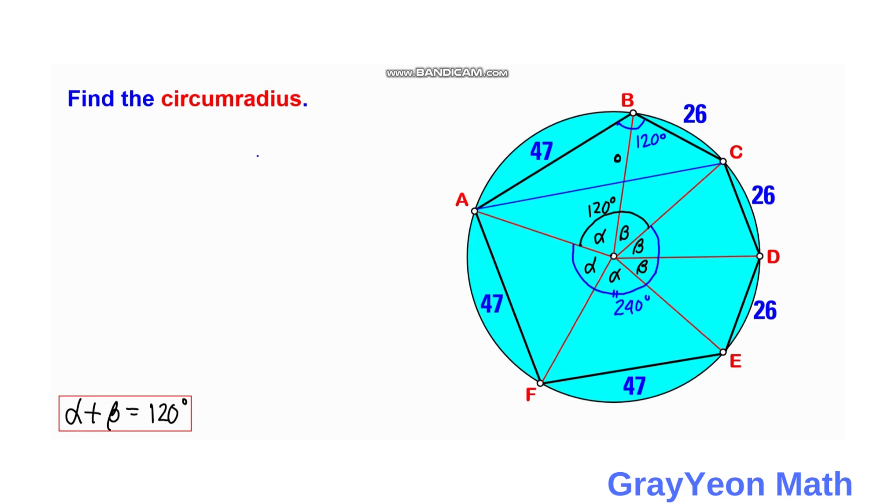Using the law of cosines, we have AC squared equals AB squared plus BC squared minus 2 times AB times BC times cosine of 120 degrees. So AC squared equals 47 squared plus 26 squared minus 2 times 47 times 26 times cosine of 120.